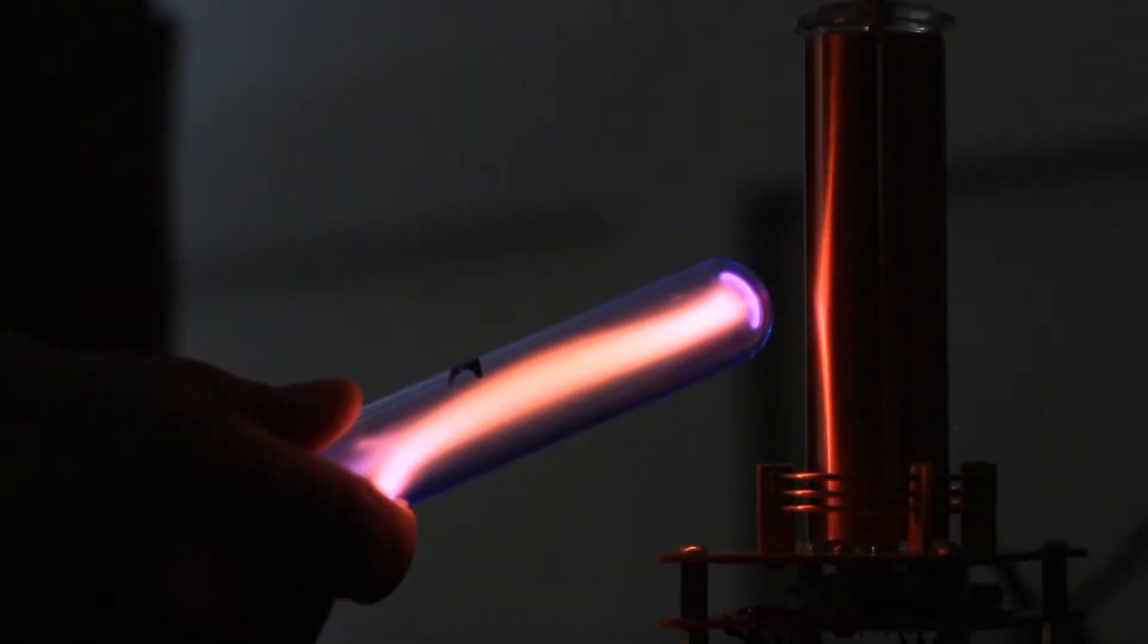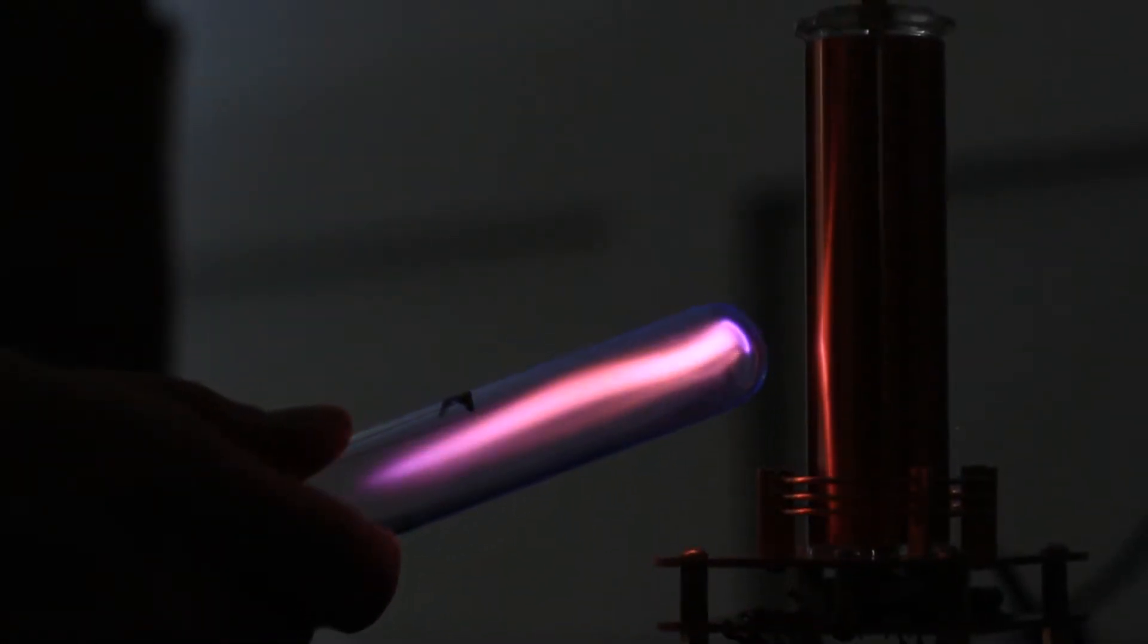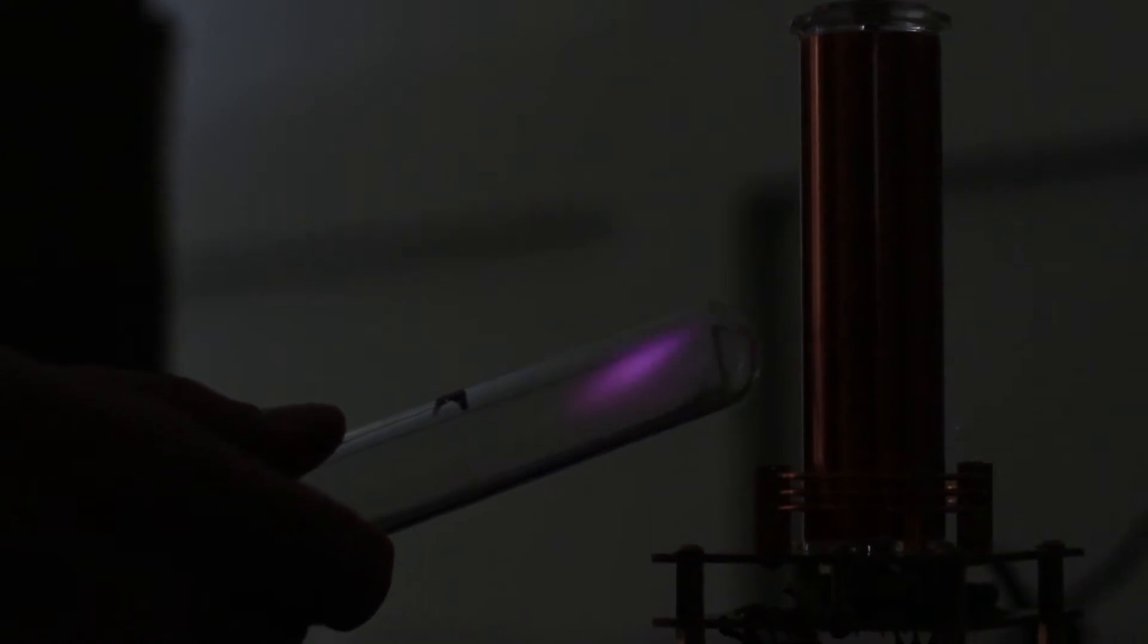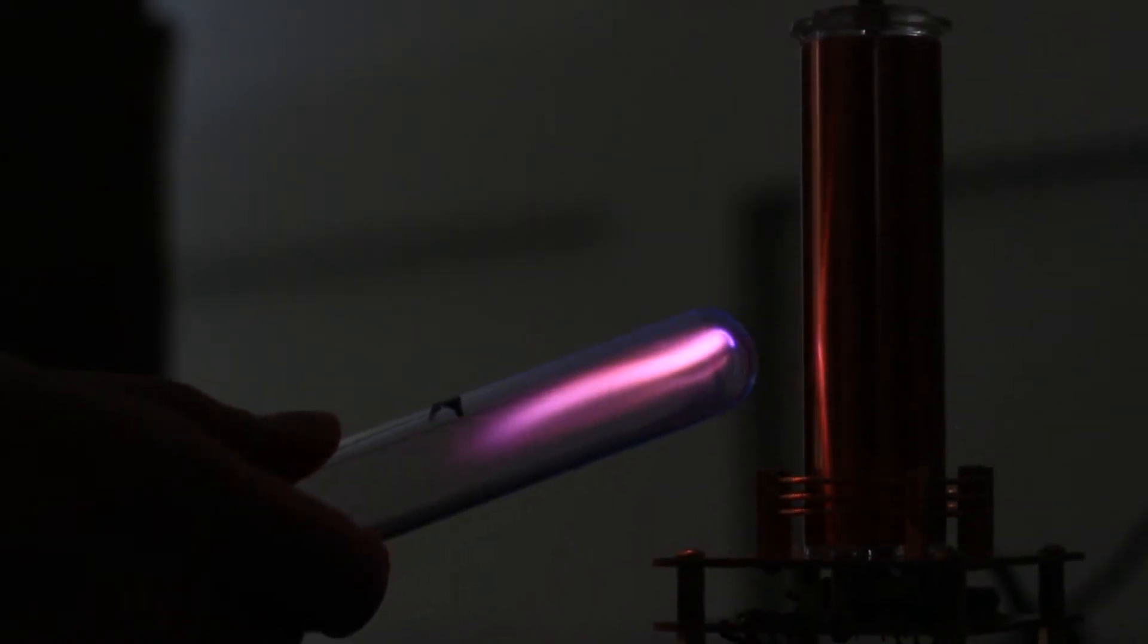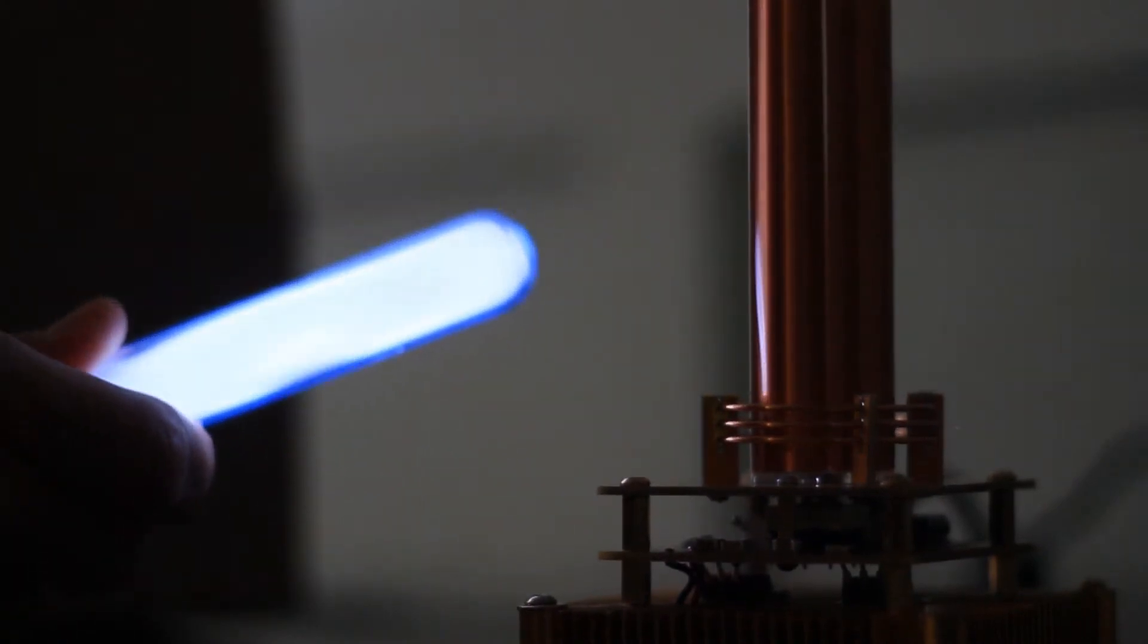In this case we're using a small Tesla coil to create the electric field. Holding the ampules close to the Tesla coil allows a tiny amount of current to flow through the gas, creating a plasma.